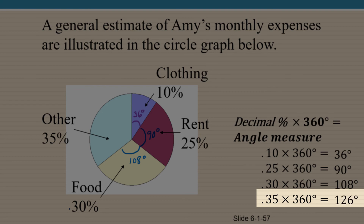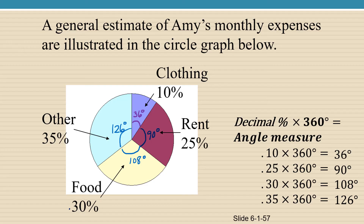That gives us 126 degrees. So if you have a question in your homework asking for the size of the central angle needed to represent a certain category on a pie chart, just multiply the decimal form of the percent by 360 to get the size of the angle.